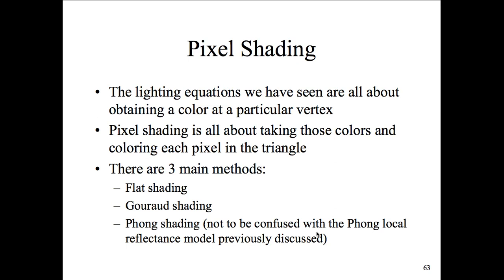We can also use color for shading — grayscale isn't just grayscale; we can add color to shading for interesting effects. Pixel shading is about taking colors and coloring each pixel in a triangle evenly. There are three main shading models: flat shading, Gouraud shading, and Phong shading.